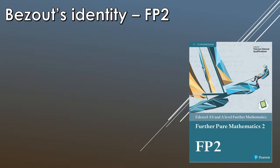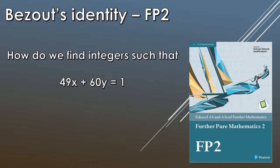What Bézout's identity does — what it allows us to do — is find integer values for certain equations. For example, how do we find integers such that 49x plus 60y is equal to 1? That's what we're going to answer today.